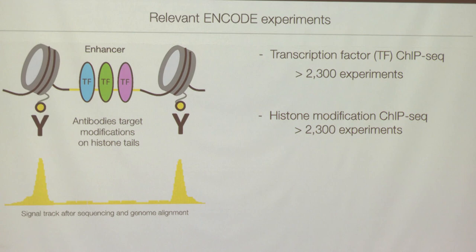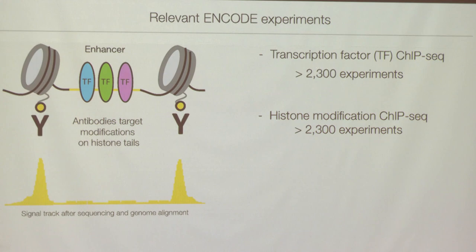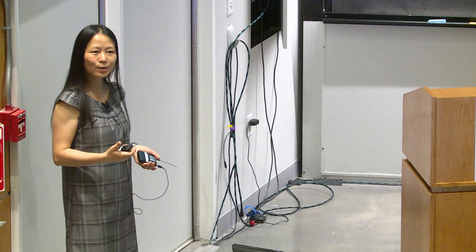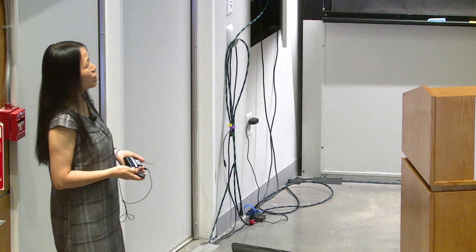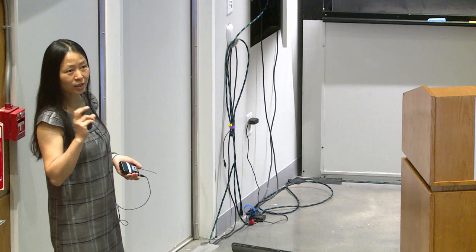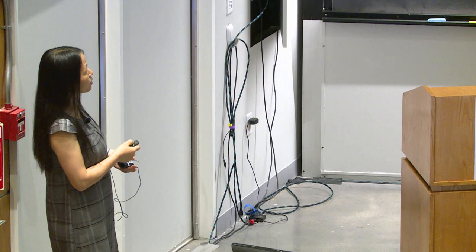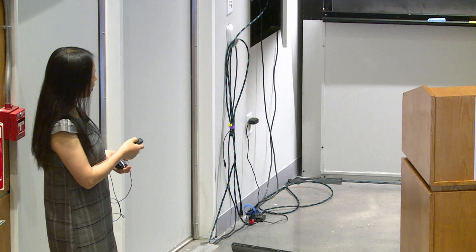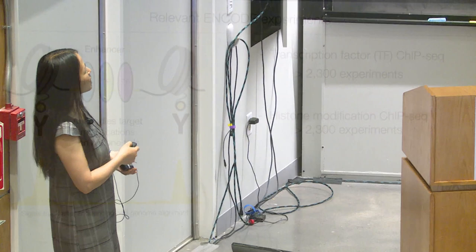In addition to looking at where transcription factors bind in the genome, you can also use the same technique to look at histone proteins. Histone proteins have N-terminus tails decorated by many post-translational modifications such as acetylations and methylation — hundreds of them — and they are like landmarks in the genome to indicate what a piece of DNA is doing. We have thousands of ChIP-seq experiments for histone modifications, and they show up as signal tracks on the one-dimensional linear genome.